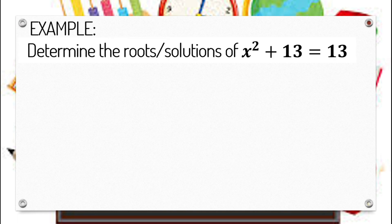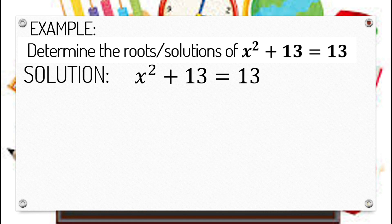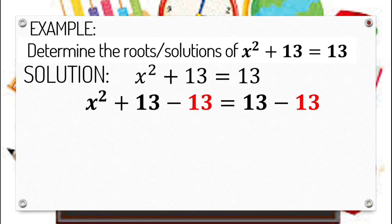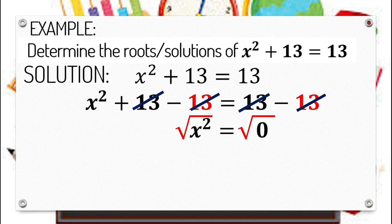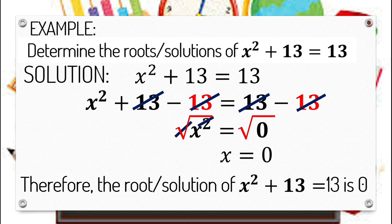Let's determine the roots or solutions of x squared plus 13 equals 13. We need to get rid of 13 on the left side by transposing it to the right side using the subtraction property of equality. That simplifies our equation to x squared equals 0. Applying extracting square roots gives x equals 0. Remember: if k is equal to 0, we have only one solution, and that is 0. Therefore, the root of x squared plus 13 equals 13 is 0.